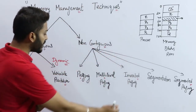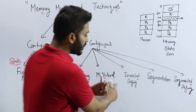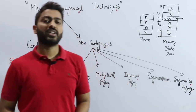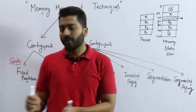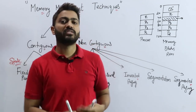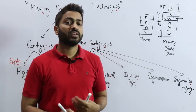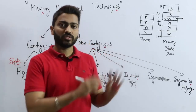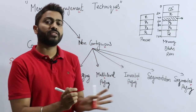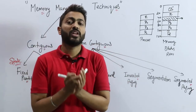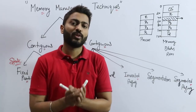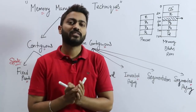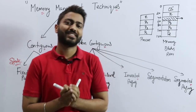In non-contiguous allocation, the major techniques we use are paging, multi-level paging, inverted paging, segmentation, and segmented paging. We will cover fixed partitioning and variable partitioning one by one. This is an overview of the different techniques of memory management. Please share with friends and subscribe to the channel.